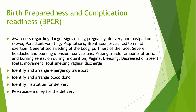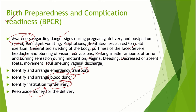What is birth preparedness and complication readiness? Awareness regarding danger signs during pregnancy, delivery, and the postpartum period is the first criterion. Then we need to identify and arrange emergency transport for the mother to reach the hospital, identify and arrange a blood donor if blood transfusion is required, and identify the institution for delivery. We need to keep money aside for delivery expenses. So awareness, transport, blood donor, institution, and money all comprise birth preparedness and complication readiness.